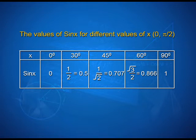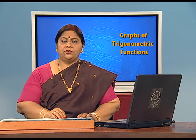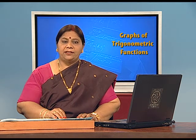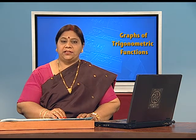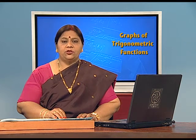The values are: sine 0° = 0, sine 30° = 1/2 = 0.5, sine 45° = 1/√2 = 0.707, sine 60° = √3/2 = 0.866, and sine 90° = 1. Using this table and the fact that sine x is an increasing function, we obtain the graph of y = sine x in the interval 0 to pi by 2.